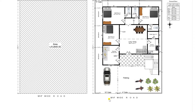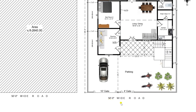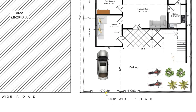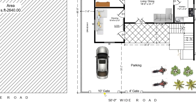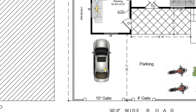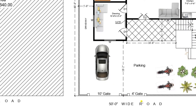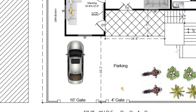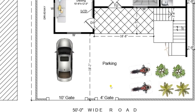Now entering into the plan in detail. In front of the 50 feet road, we have provided 2 gates — one entrance for cars and big vehicles, and another for people entering the house. We have provided one 10 feet gate to enter cars and motor vehicles, and a small 4 feet gate is also provided for people entering the house.